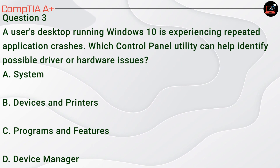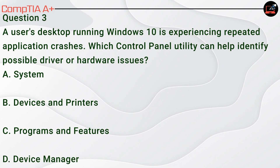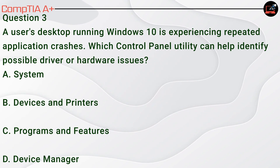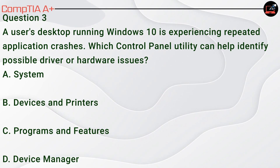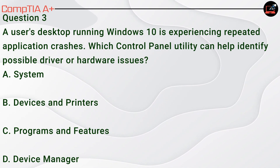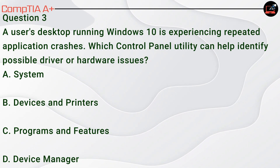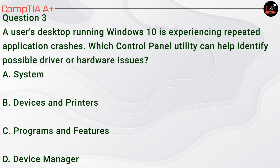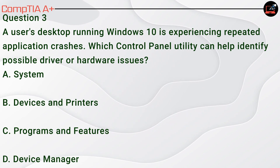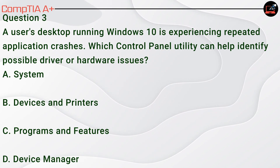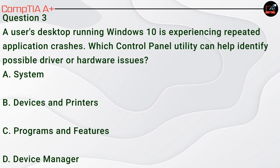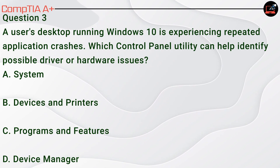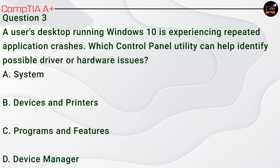Question 3. A user's desktop running Windows 10 is experiencing repeated application crashes. Which Control Panel utility can help identify possible driver or hardware issues? A. System. B. Devices and Printers. C. Programs and Features. D. Device Manager.